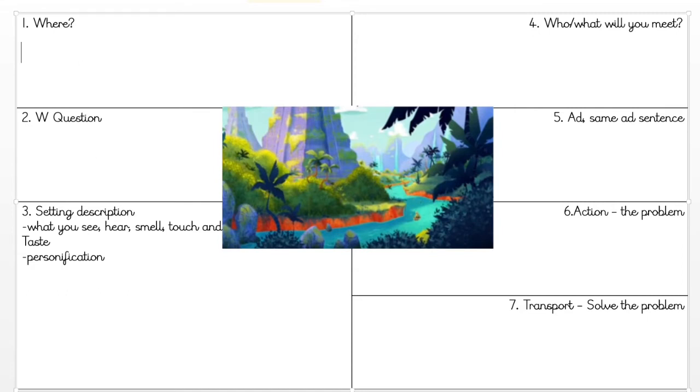For the where box, we are going to add a little bit more description than just saying we are in a desert. I'm going to say the Amazon river running through the Brazilian Rainforest.